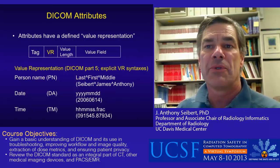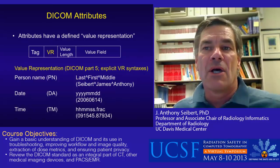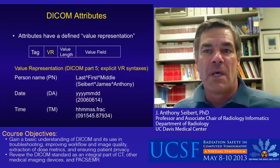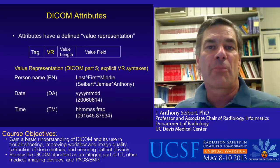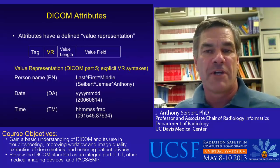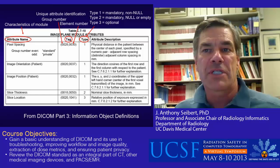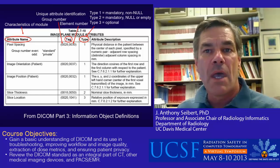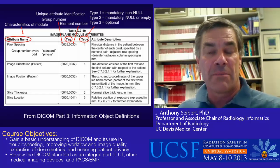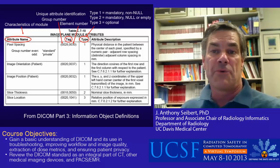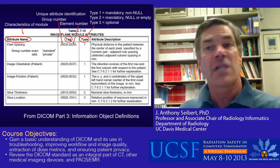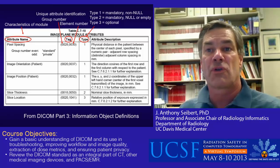An important part of an attribute is the DICOM tag, shown as a group number, comma, element number pair which uniquely identifies the attribute. Tags with an even group number are public and tags with an odd group number are private, mostly for proprietary use by the vendor. DICOM also requires a type field identifying the attribute to be mandatory and filled in as indicated by a 1, mandatory and either filled in or left blank as indicated by a 2, or optional as indicated by a 3. Examples of pixel spacing attribute, image orientation, image position, slice thickness, and slice location are shown with descriptions.